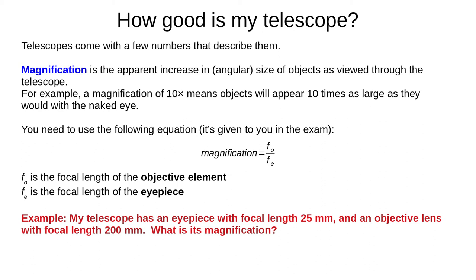Magnification is the apparent increase in angular size of objects as viewed through the telescope. For example, a magnification of 10 times means objects will appear 10 times as large as they would with the naked eye. The magnification equation, given to you in the GCSE exam, is: magnification equals FO divided by FE, where FO is the focal length of the objective element and FE is the focal length of the eyepiece. For example, a telescope with an eyepiece focal length of 25 mm and an objective lens focal length of 200 mm gives a magnification of 200 divided by 25, which equals 8 times magnification.